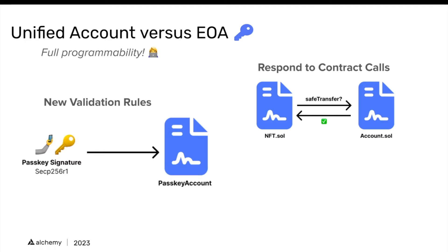We could also get new validation rules. So if you have a passkey that you want to sign from your phone, for example, you could potentially do this with a different type of cryptography than the one we typically use with externally owned accounts. And this cryptography can be checked on-chain inside of your smart contract.